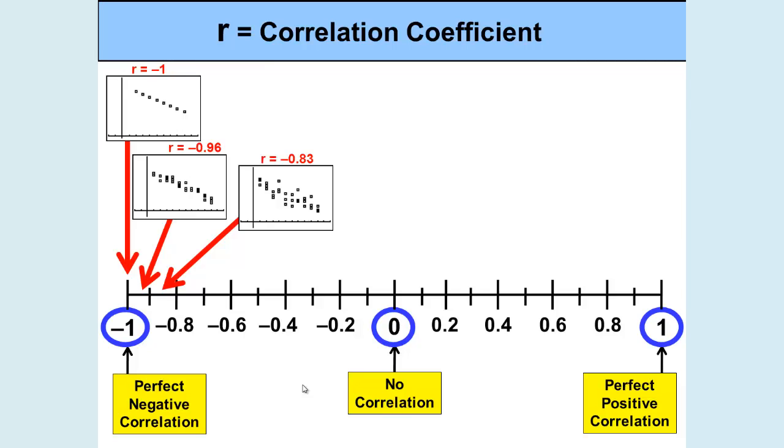At R equaling negative 0.83, it is still a negative slope. And we can see that it's slightly less linear than the previous two as it moves away from the negative 1.